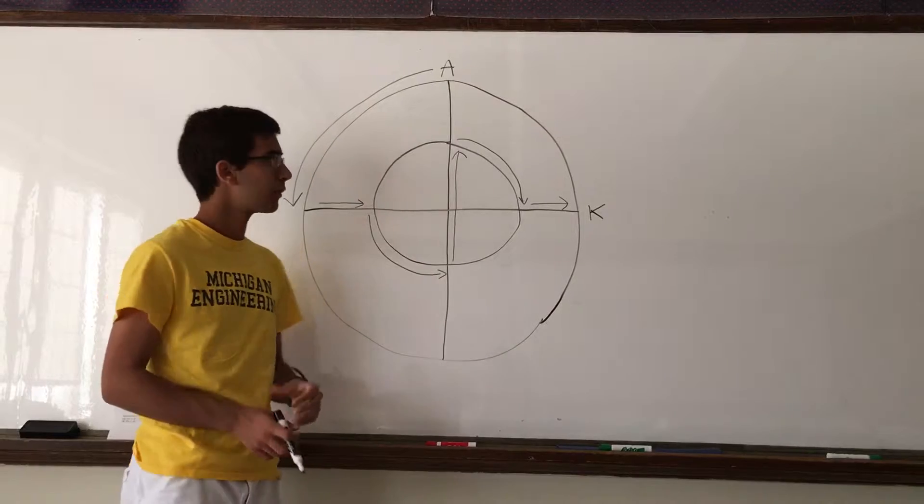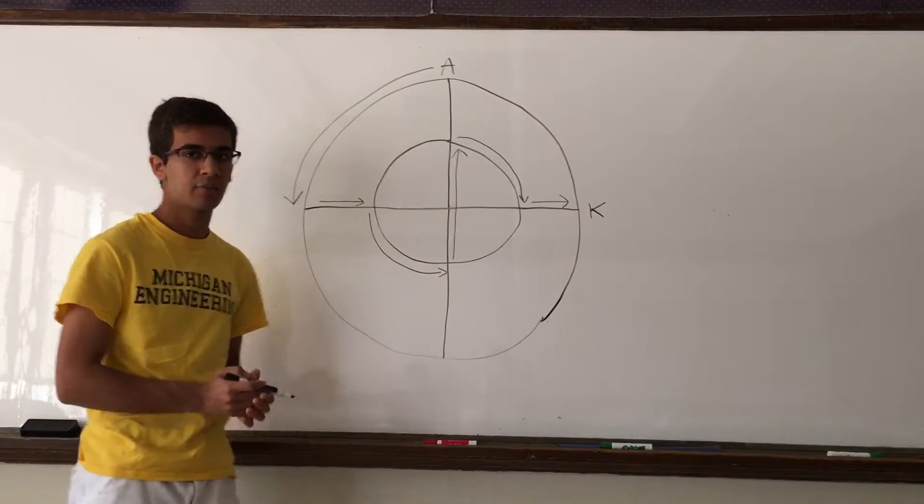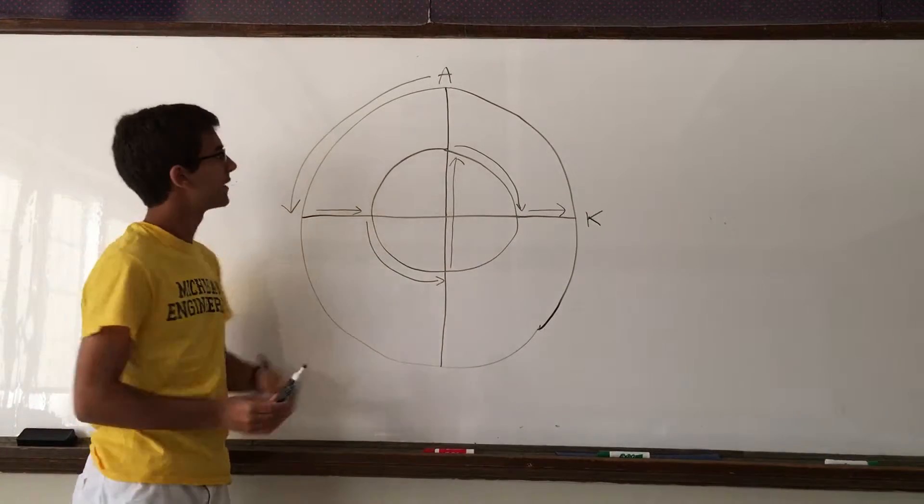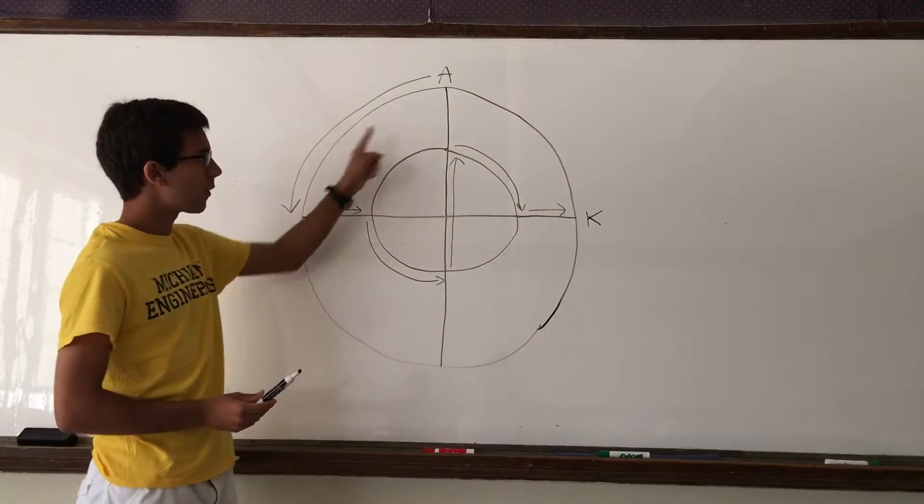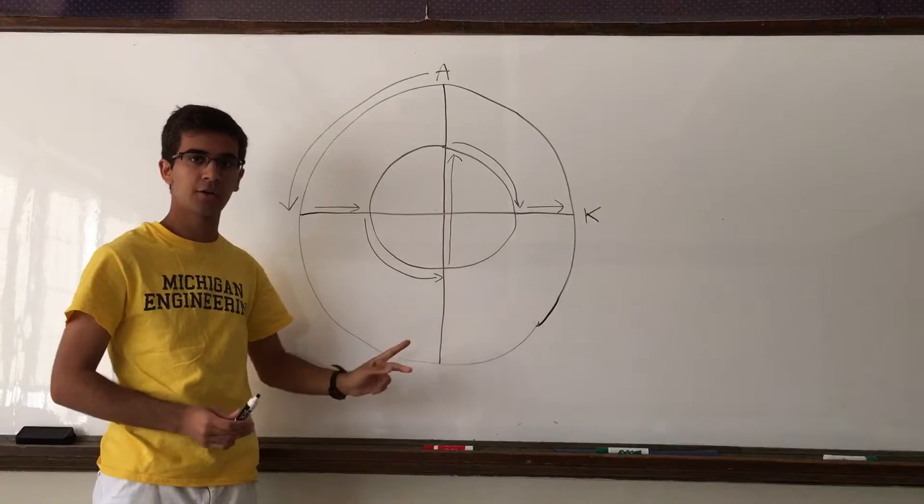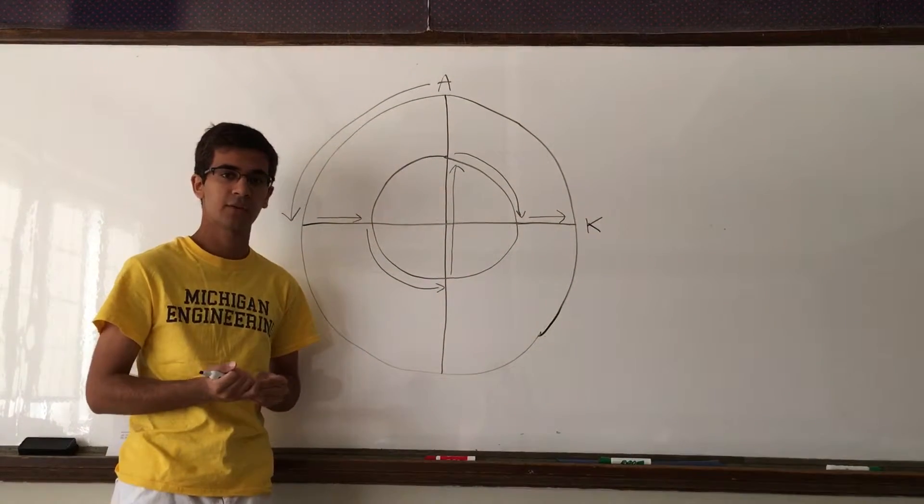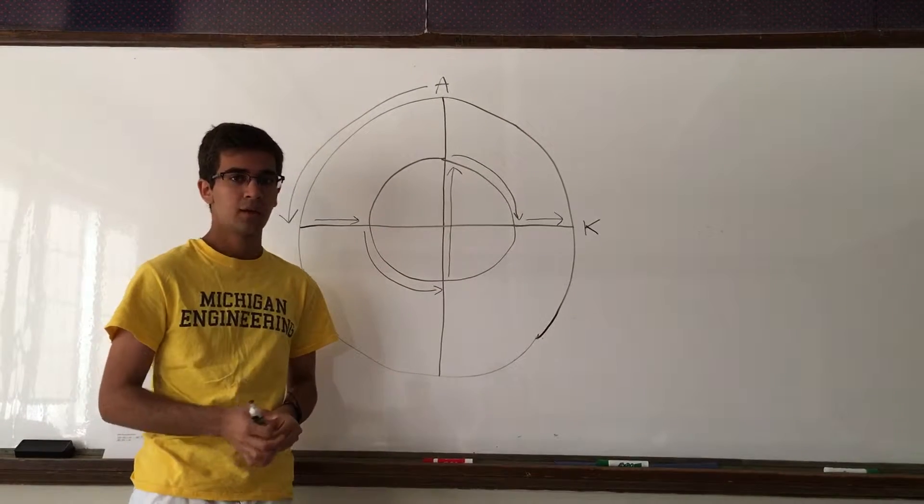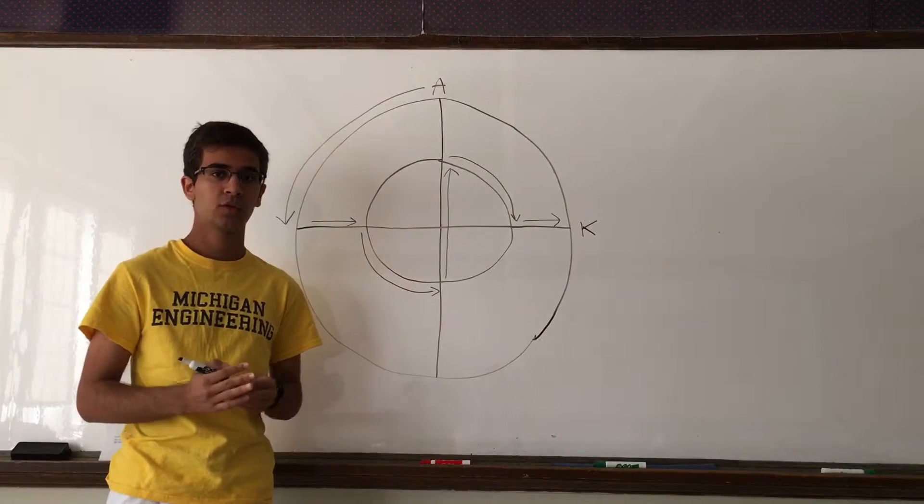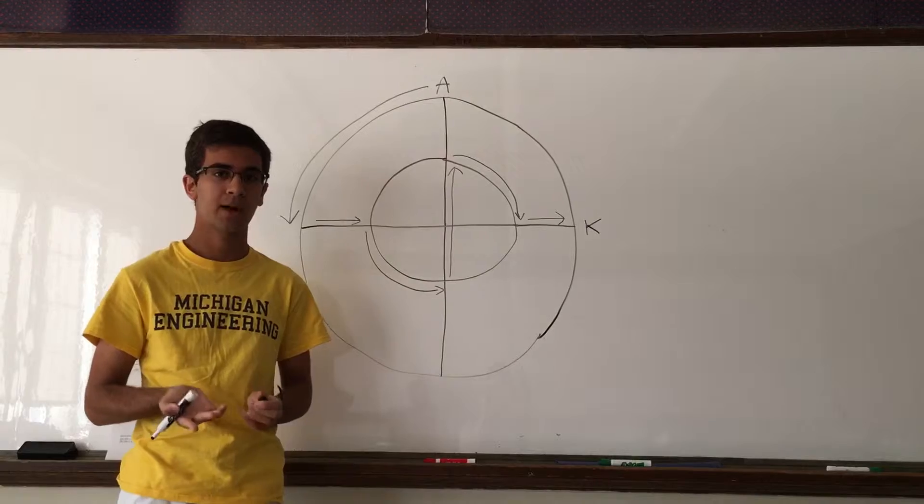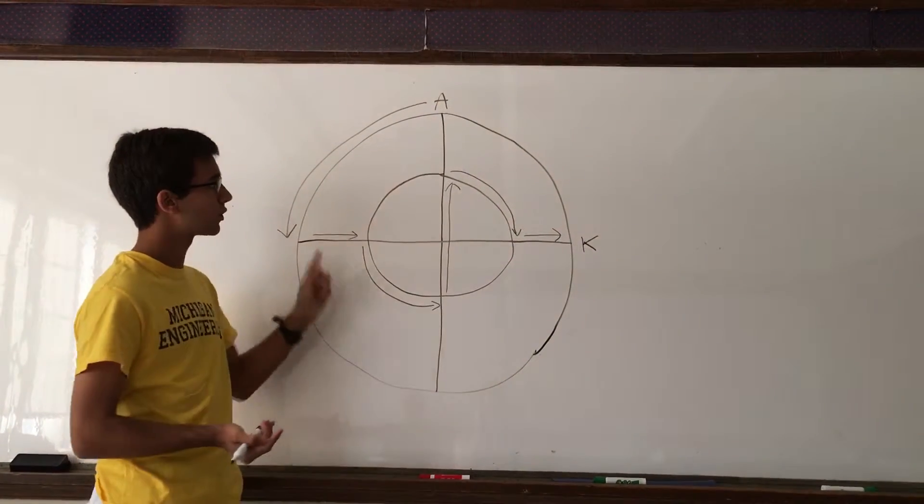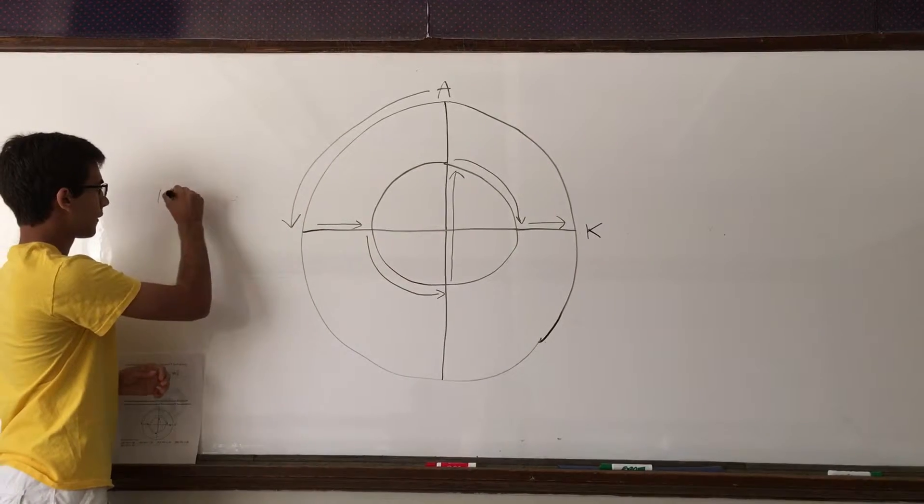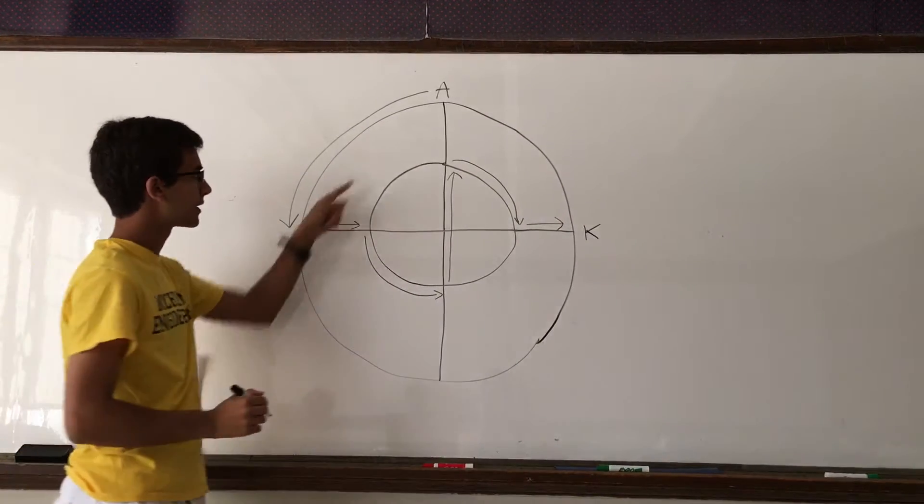We can calculate this problem by just adding up the separate pieces of the path. Let's start with this big arrow. We know that this big arrow is one quarter of the circumference of the entire circle. The circumference of a circle is 2πr. The radius of this big circle is 20 meters, which means the total circumference is 2π times 20, or 40π. If we divide that total circumference by 4, we get 10π meters for this one arrow.